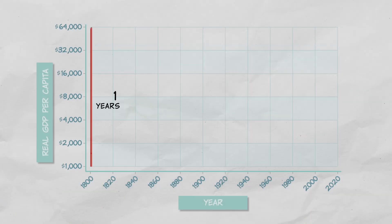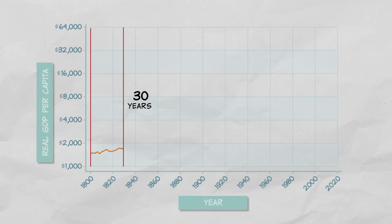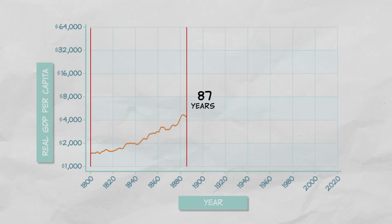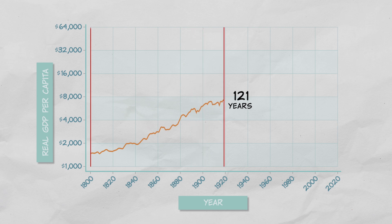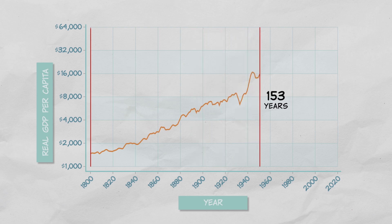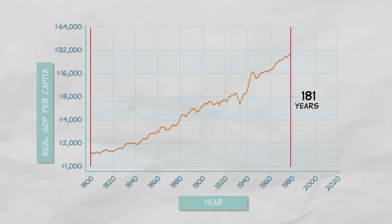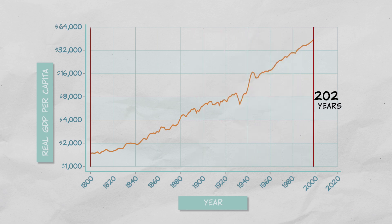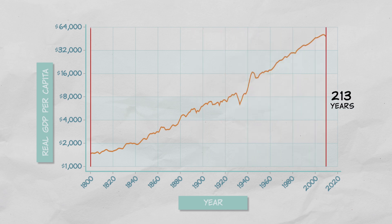The lesson from this graph is that the most basic reason the United States is wealthy is simply that it has grown consistently for a long period of time.